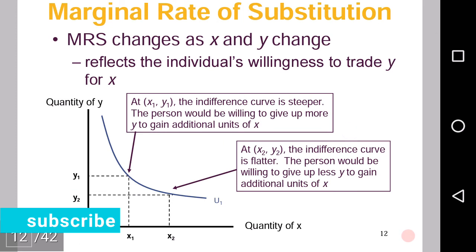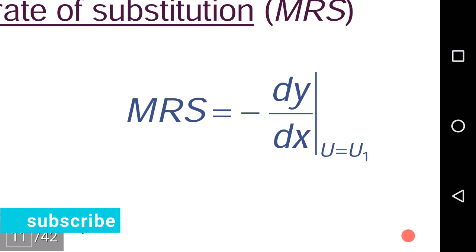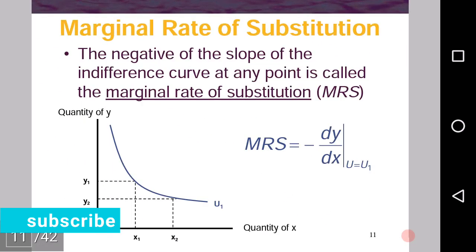MRS, marginal rate of substitution, changes as x and y change. It reflects how much the individual is willing to trade the quantity of y for x — how much y is he ready to give up for x. The formula for MRS is negative dy by dx, basically the change in the y-axis divided by the change in the x-axis.